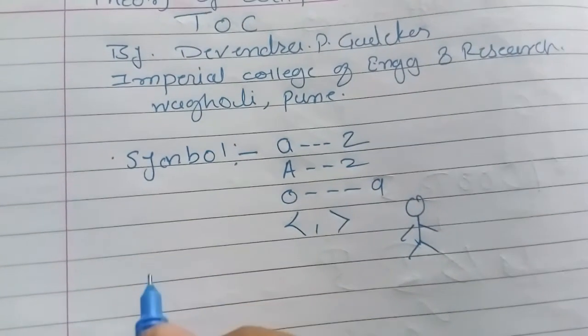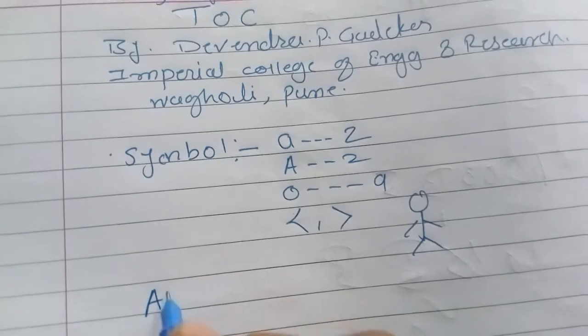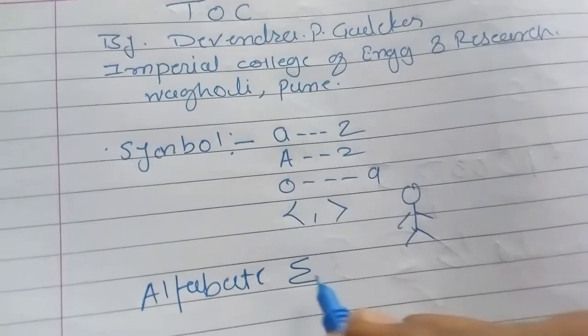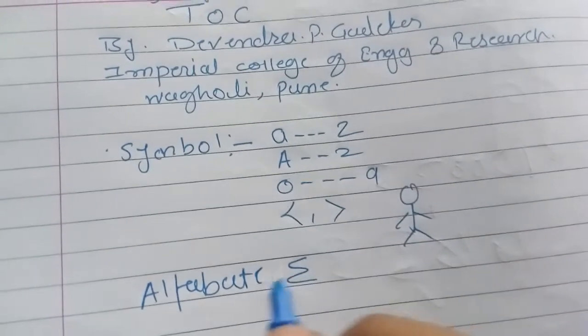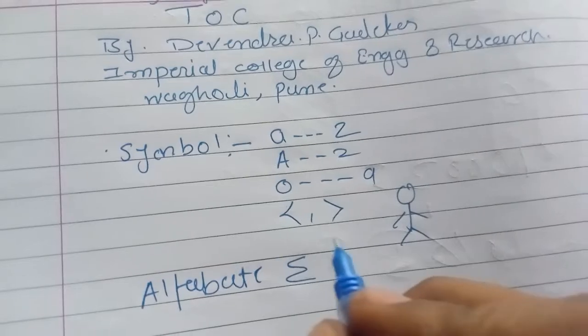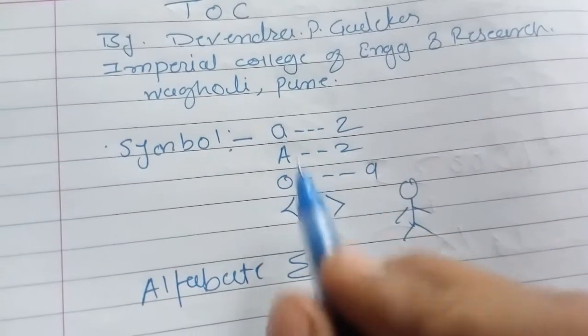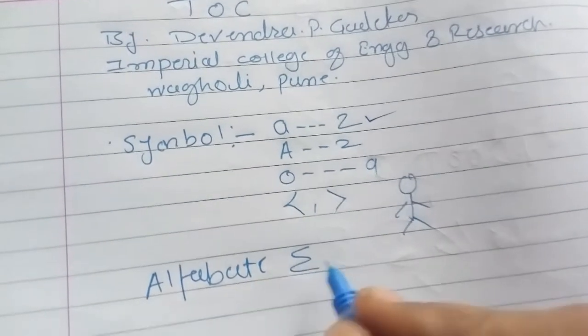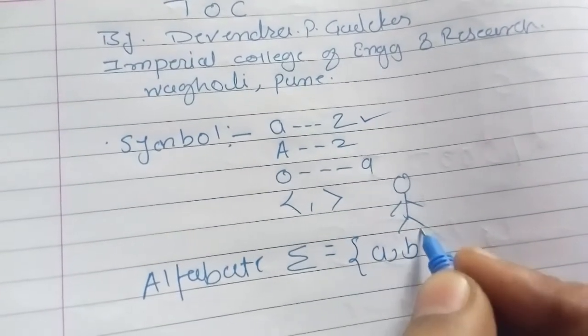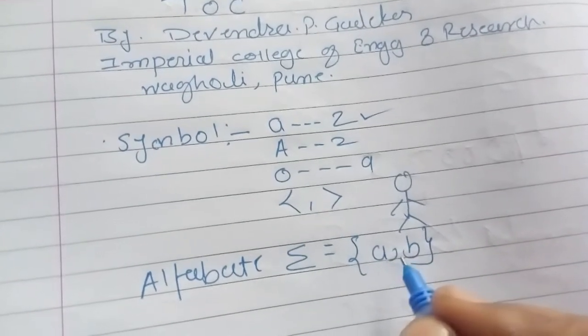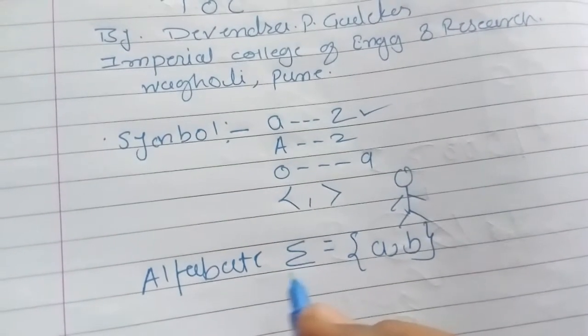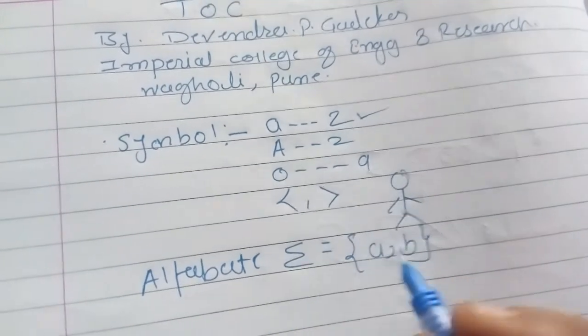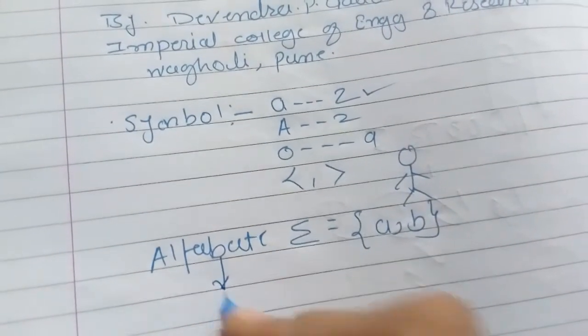The next thing is alphabet. It is denoted by the symbol sigma. Alphabet is the finite collection of any symbol. If I take symbols from characters, say two characters a and b, the finite collection of these symbols is nothing but the alphabet, denoted by sigma.